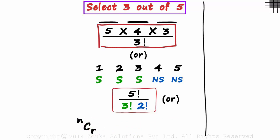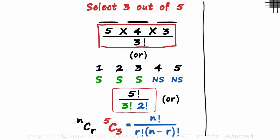As we are selecting three out of five, this will be 5C3. The formula for combinations is N factorial over R factorial times N minus R factorial.